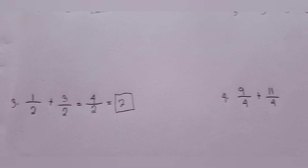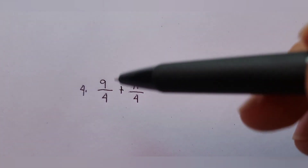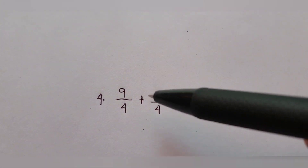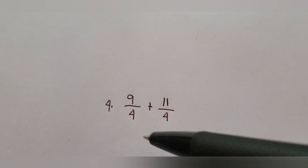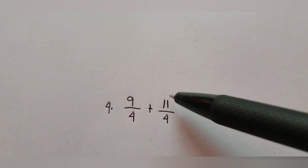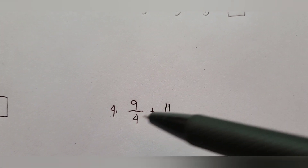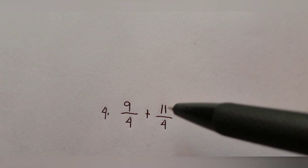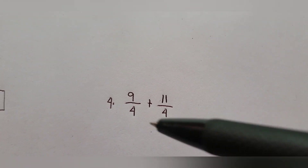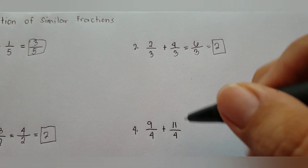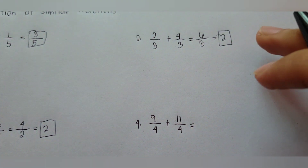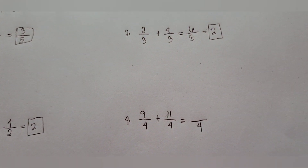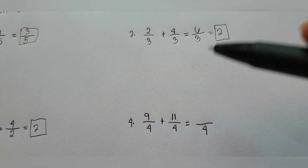For example number four, notice that nine over four and eleven over four are both improper fractions — the numerator is greater than the denominator. Our concern here is to add similar fractions, so it doesn't matter whether they are proper or improper. The first step is to copy the denominator, which is four.